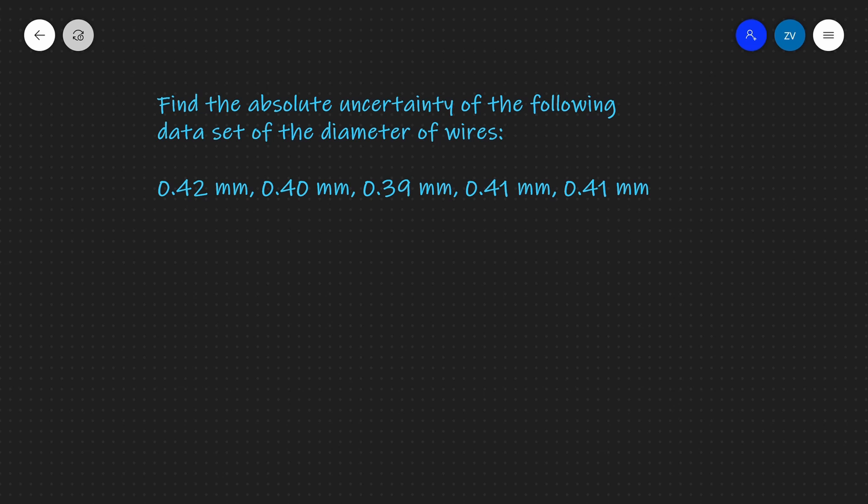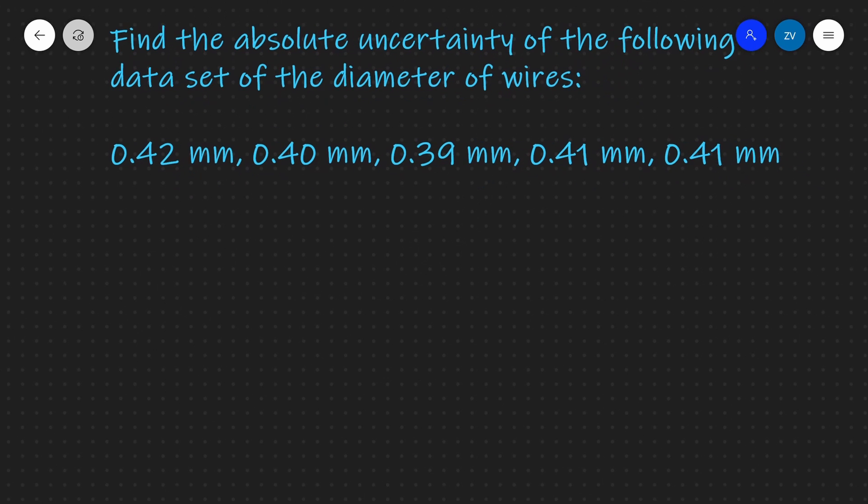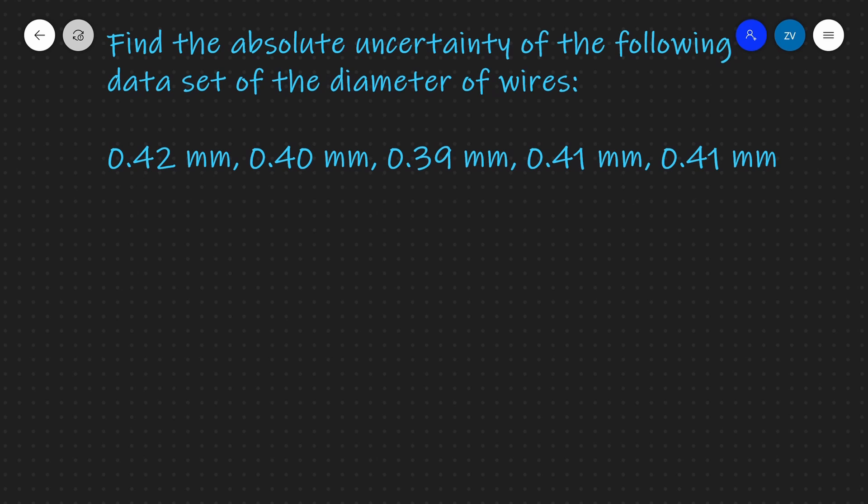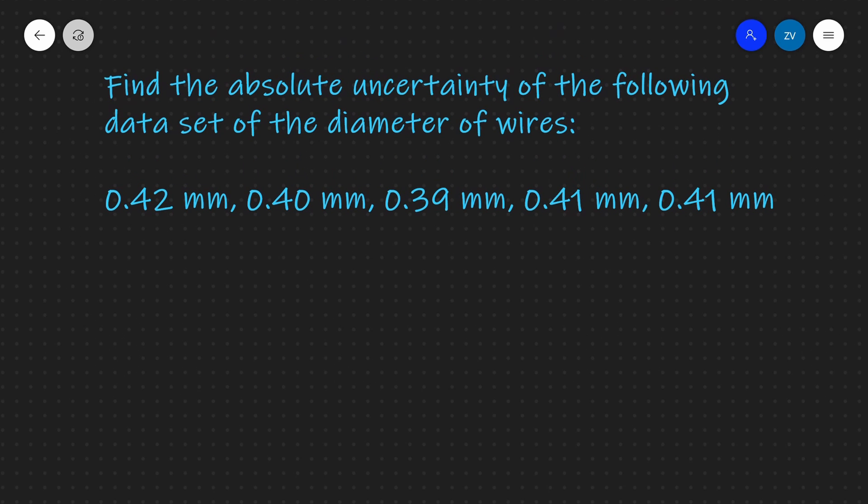What we're going to be discussing today is finding the absolute uncertainty from a data set. In this case, we have one, two, three, four, five values of the diameter of a wire.